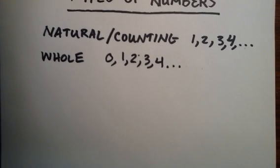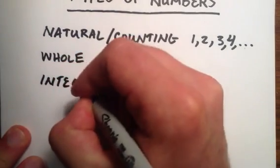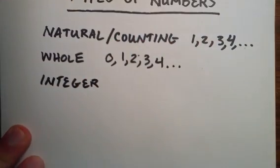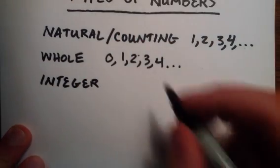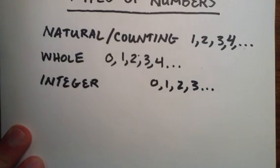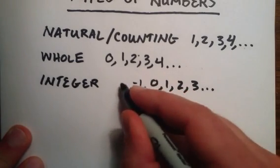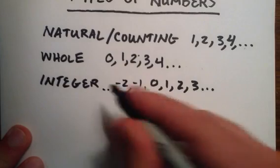The next important type of number is the integer. The integers contain all of the whole numbers: zero, one, two, and so on. In addition to the whole numbers, the integers also include the negative counting numbers: minus one, minus two, and so on.